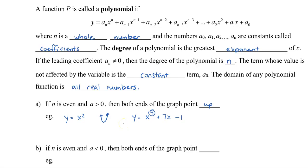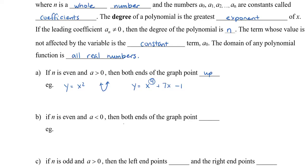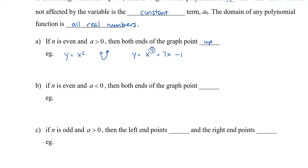If it's even but the coefficient is actually less than 0, then both ends of the graph are actually going to point down. For example, we can have y = -x², and this is the parabola which points down. We can also have y = -5x⁶ - 2, and this would also point down.